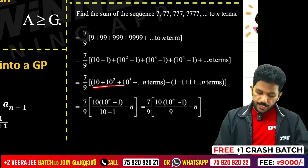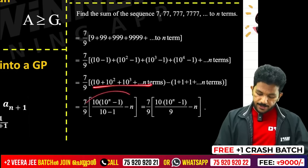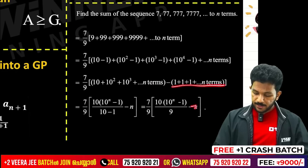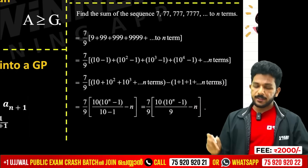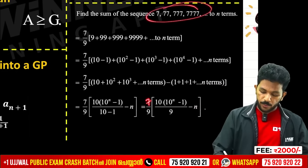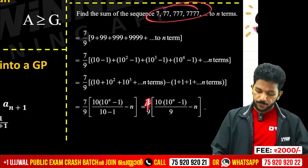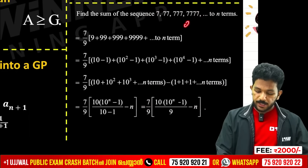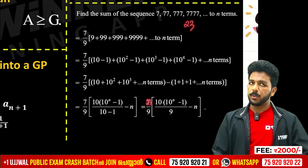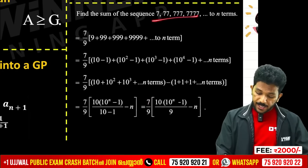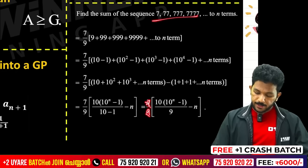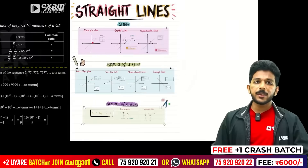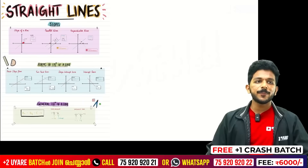For example, 7 plus 99 terms — if you have a GP with terms like 9, 99, 999 — this will simplify to a sum of a GP. You will get 8, not 9. Now we have straight lines.